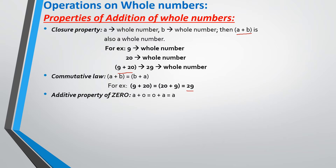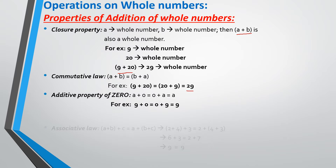Additive property of 0: when a given number is a whole number and you add it with 0, you get the same whole number as your answer. For example, 9 is a whole number. When I add it with 0, my answer is going to be 9 only. There won't be any change.